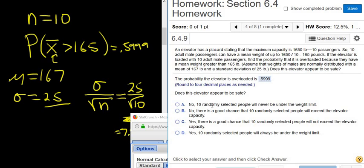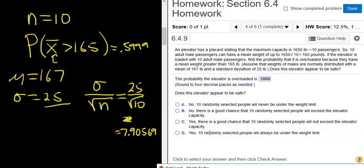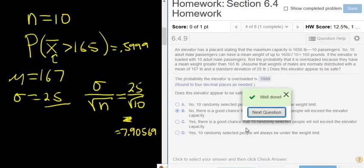Does this elevator appear to be safe? I'm going to say, even before reading the choices, no way, right? Because there's almost a 60% chance that the elevator is going to overload. So very dangerous. So I would say, no, there is a good chance that 10 randomly selected people will exceed the elevator capacity. Yeah, that's dangerous. That's it.